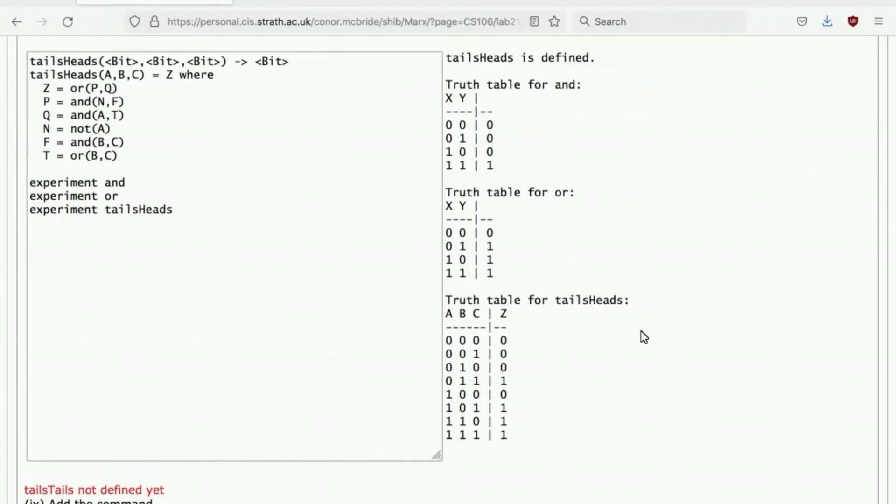Once more, with Syrup, here I've got, for example, tails heads defined as the lab instructions gave you. And I've got my experiments for AND and OR and tails heads. And you can see that AND is a lot like the top half of the truth table and that OR is a lot like the bottom half of the truth table.